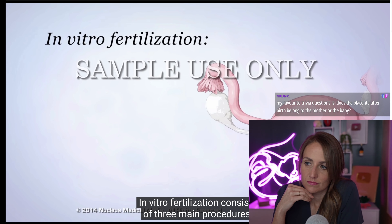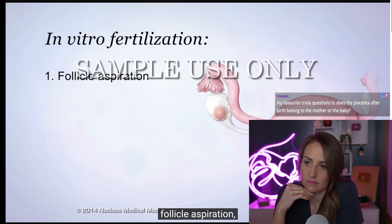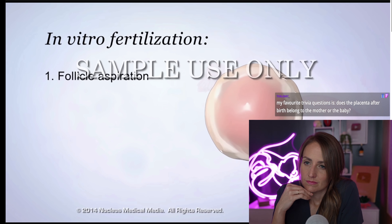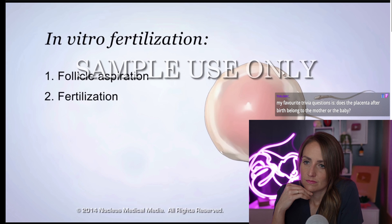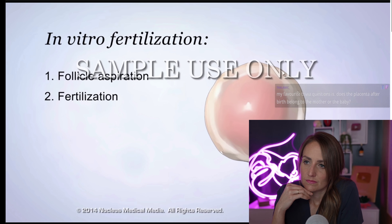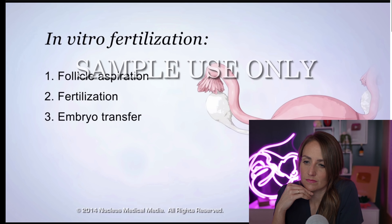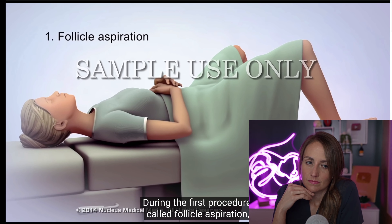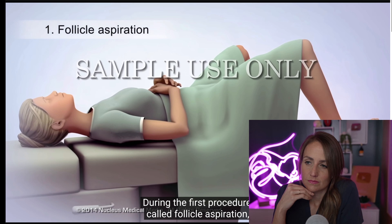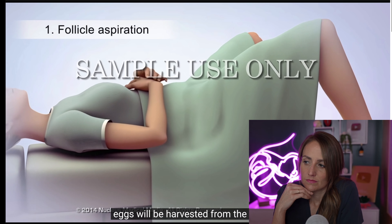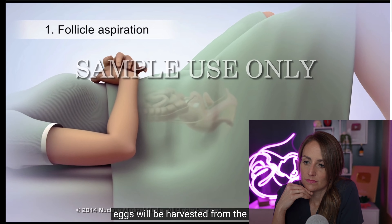In vitro fertilization consists of three main procedures: follicle aspiration, fertilization, and embryo transfer. During the first procedure, called follicle aspiration, eggs will be harvested from the ovaries.